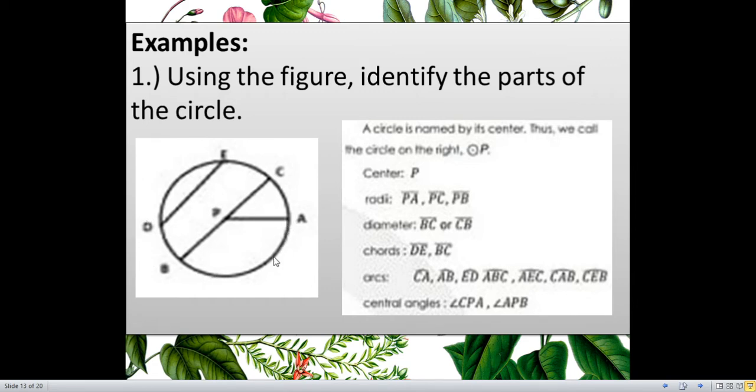Arc CEB is the semicircle. But, there's still many more, if you want to take a look on those arcs. So, for central angles, we can have angle CPA, and angle APB. We have two central angles this time. Angle CPA for this part, and angle APB for the other part.